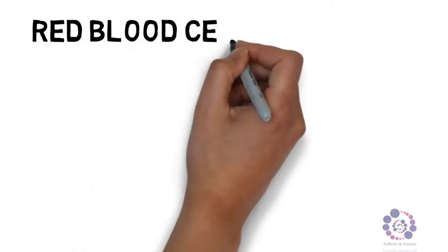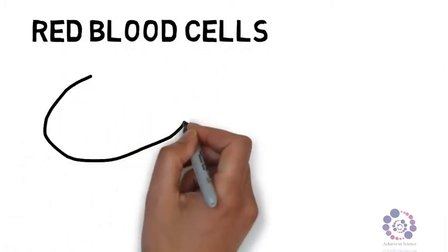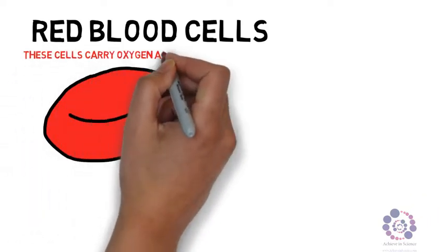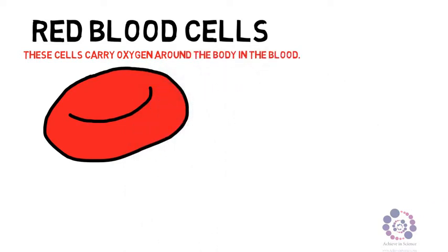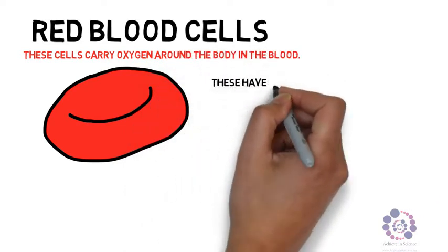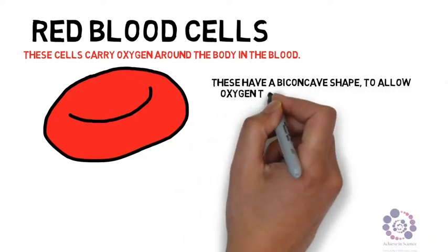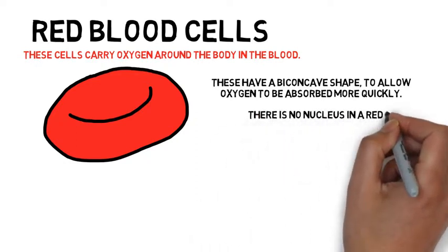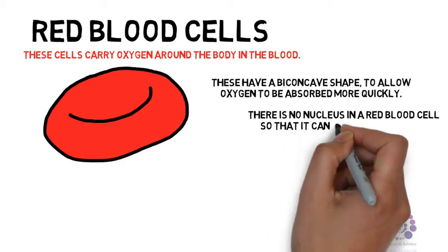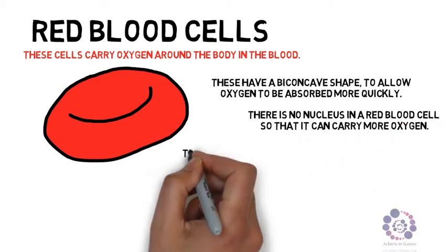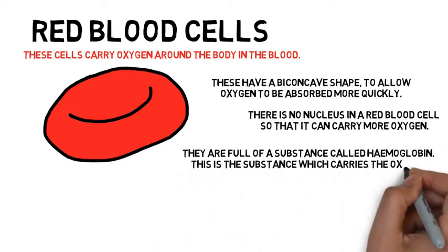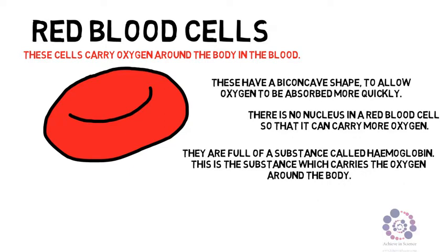Let's start off with one of the most important cells: red blood cells. These cells are designed to carry oxygen around the body. They are found within the blood and have different adaptations that allow them to carry out their specific role. They have a biconcave shape to allow them to absorb oxygen and provide a large surface area. They have no nucleus so they can carry more oxygen. They are full of a substance called haemoglobin, which combines with oxygen to form oxyhaemoglobin to ensure that oxygen travels around the body.